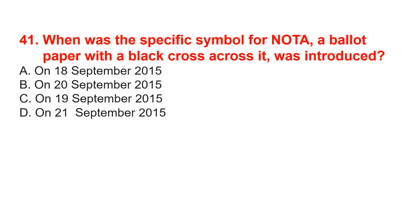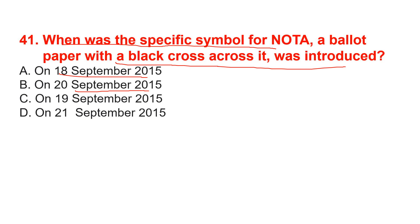When was the specific symbol for NOTA — a ballot paper with a black cross across it — introduced? Options are 18 September 2015, 20 September 2015, 19 September 2015, or 21 September 2015. The correct option is option A — on 18 September 2015.